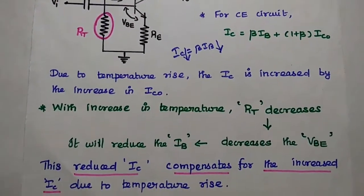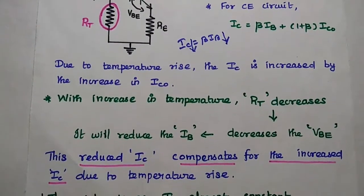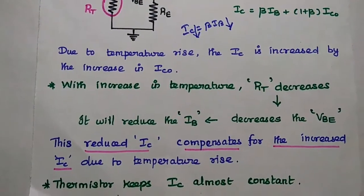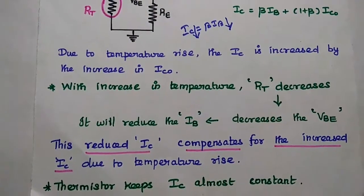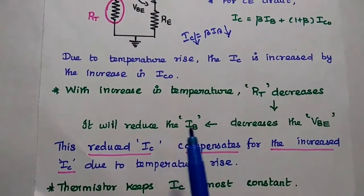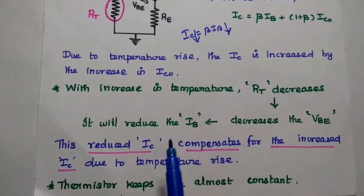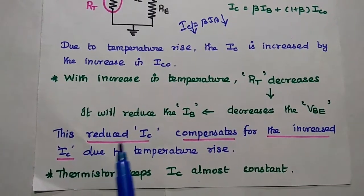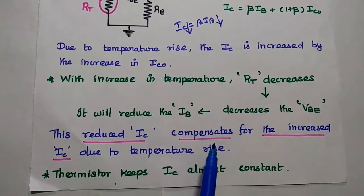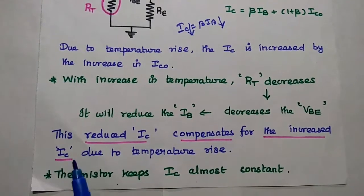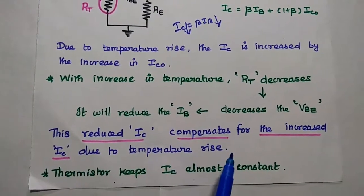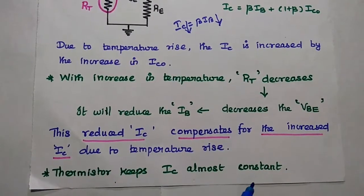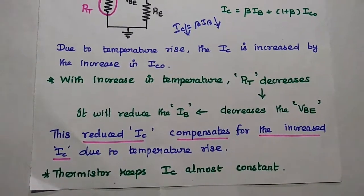With increase in temperature, the thermistor resistance decreases, in turn decreasing the base-emitter voltage, which reduces the base current. If the base current is reduced, the collector current is also reduced. This reduced collector current compensates for the increased collector current due to temperature rise. Finally, the collector current remains constant.